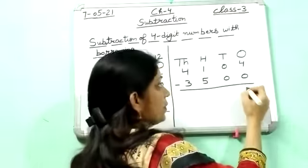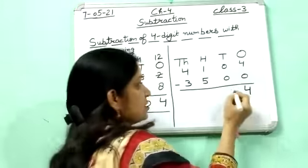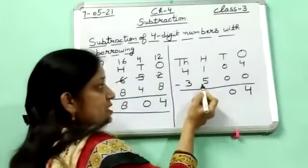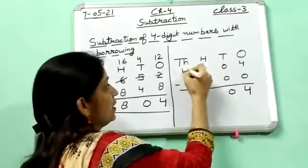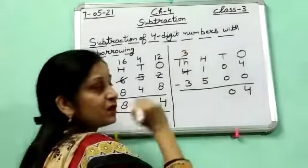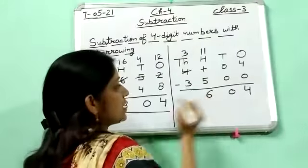So here is 4. 0 minus 0, 0 minus 0 is 0. Now again we can't subtract 5 from 1. So we borrow from here. Here becomes 3 and here becomes 11. Now 11 minus 5 is 6.